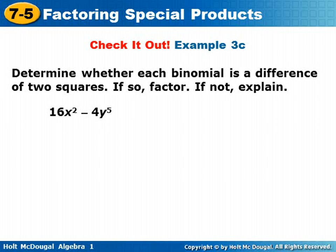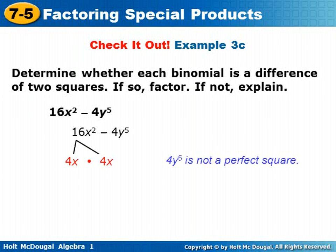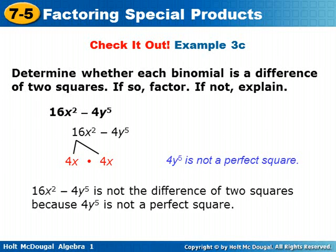Determine whether each binomial is a difference of two squares. If so, factor. If not, explain. For 16x squared minus 4y to the 5th — try this on your own and check back. 16x squared is a perfect square — 4x times 4x — but 4y to the 5th is not a perfect square. So 16x squared minus 4y to the 5th is not the difference of two squares because 4y to the 5th is not a perfect square.